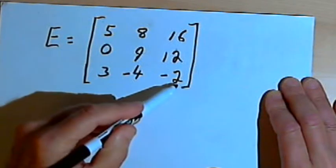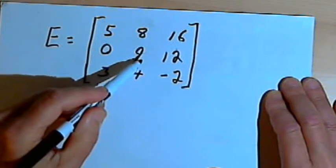So the diagonal for this matrix is 5, 9, and negative 2.